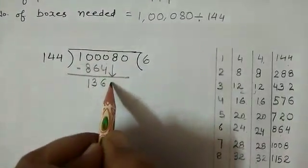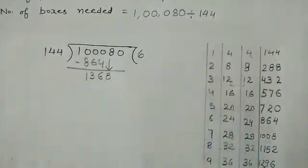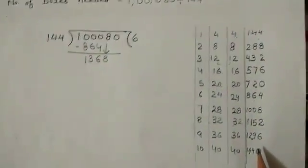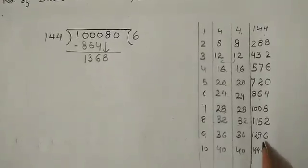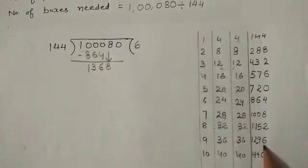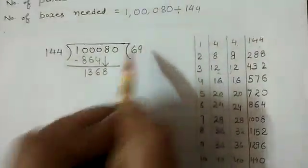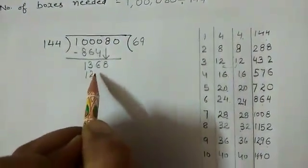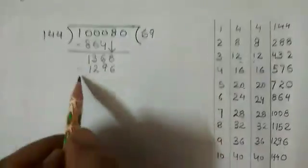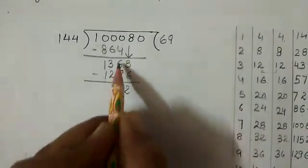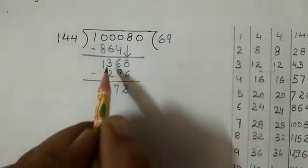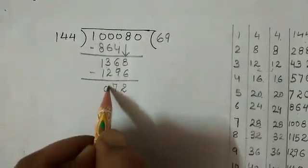Now note down next number 1368. Now see which number is less than 1368, this is only 1296. So write this number here. 8 minus 6 is 2, 16 minus 9 is 7, 2 minus 2 is 0.